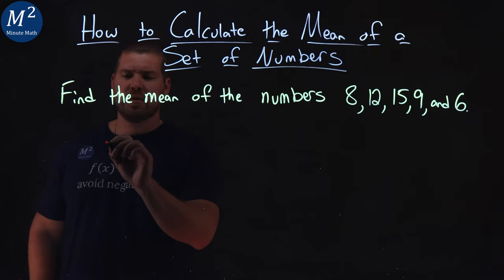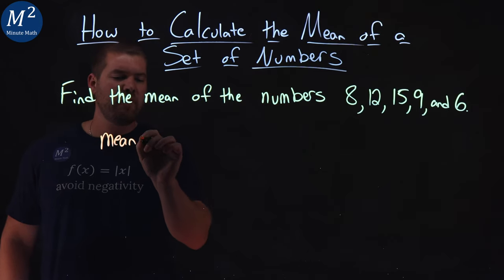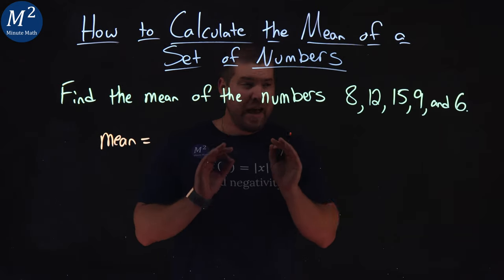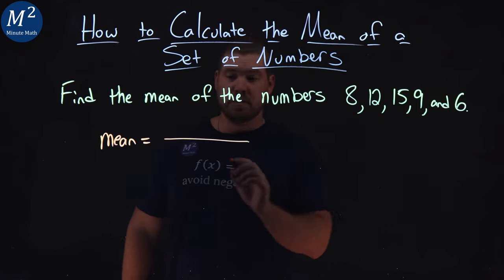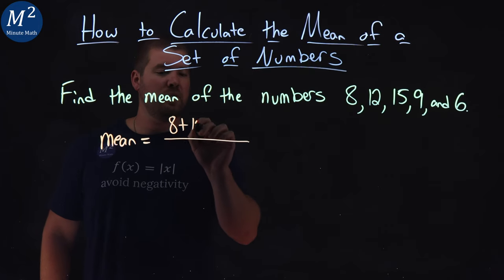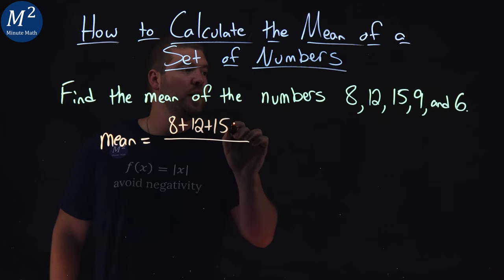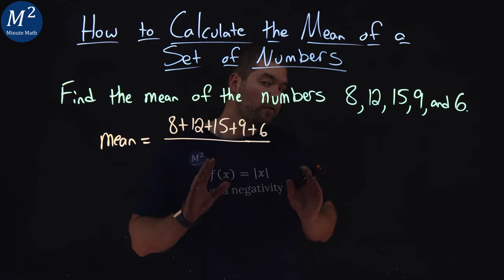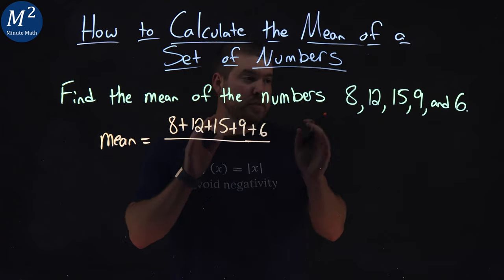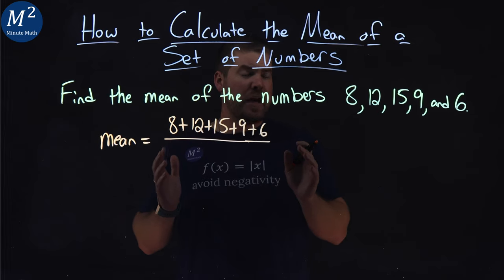So we take our set of numbers, our mean, I want to find that. That is actually equal to the sum of all of our numbers, 8 plus 12 plus 15 plus 9 plus 6 over the numbers, the total numbers that we have.